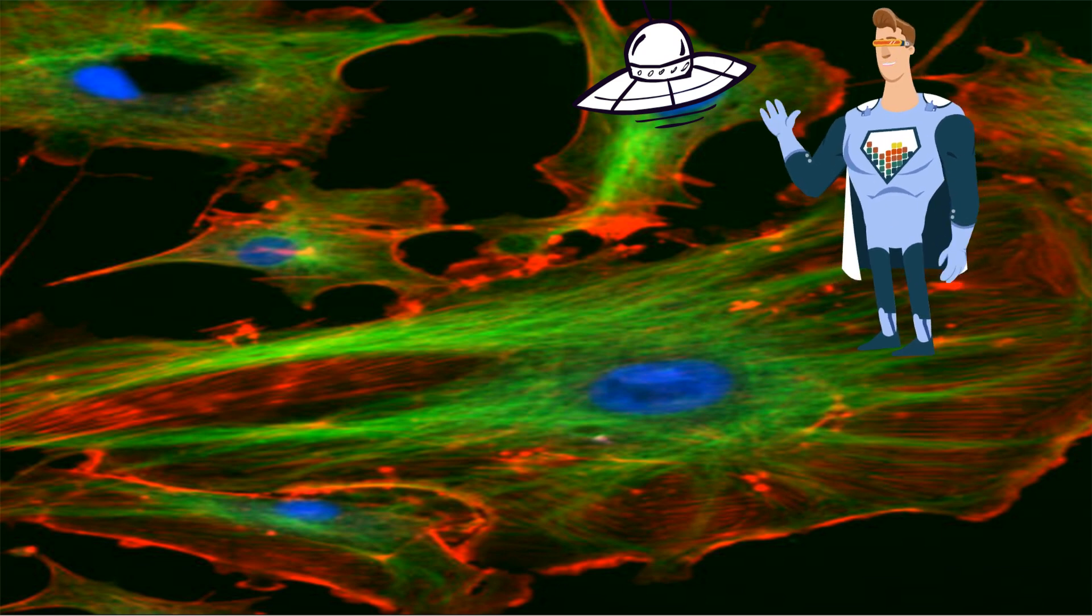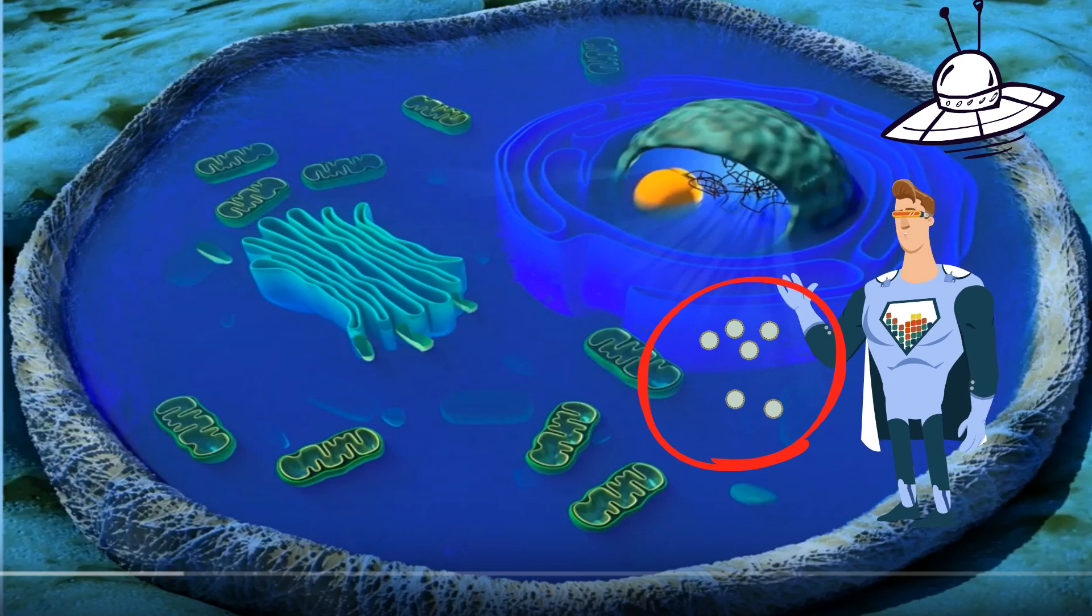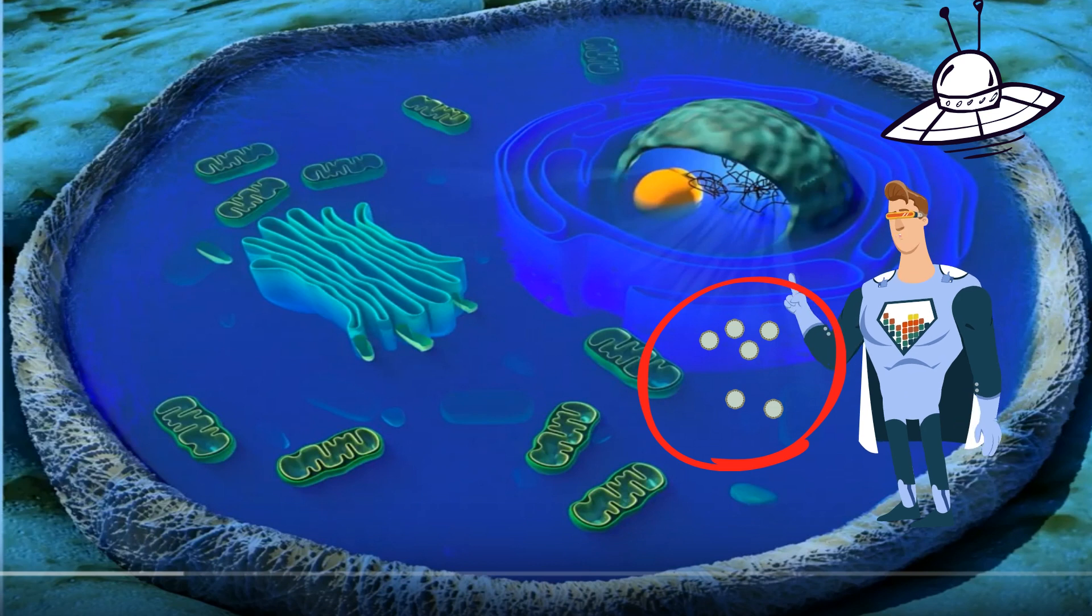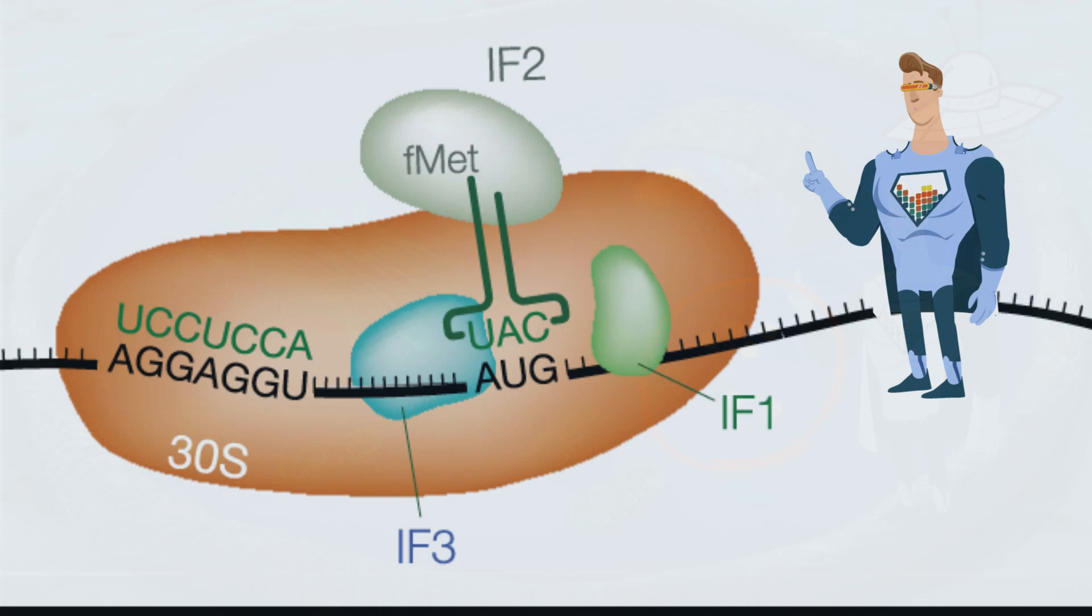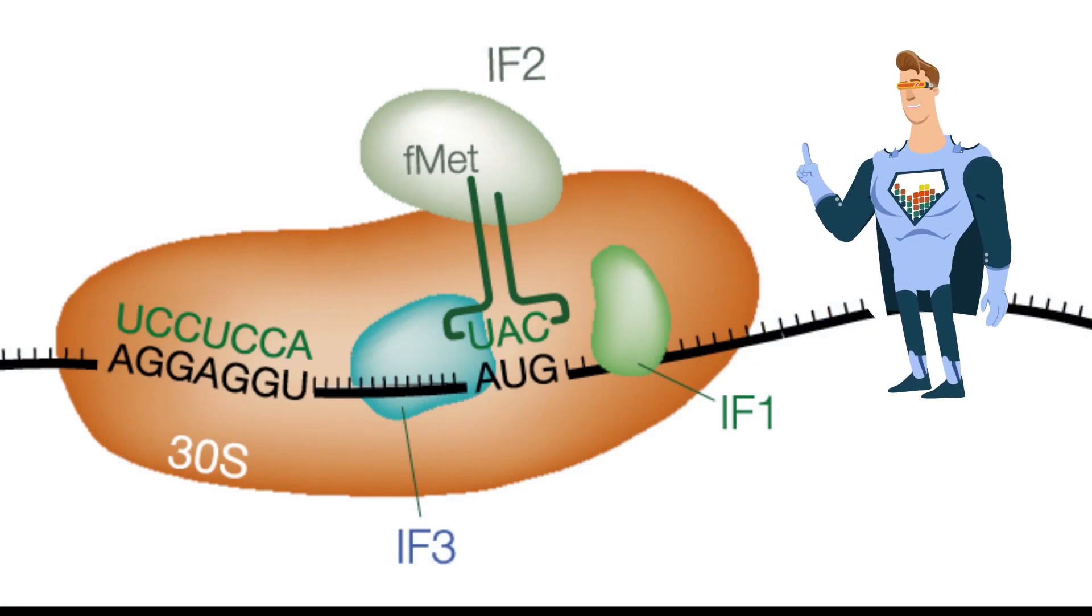See these tiny dots? They are called ribosomes. They get instructions from the nucleus and make building blocks for the cell called proteins. Here is a ribosome hard at work. They are found on the rough ER and in the cytoplasm.